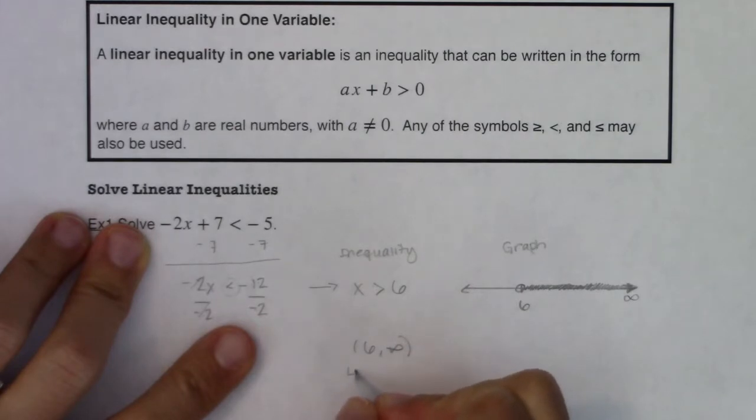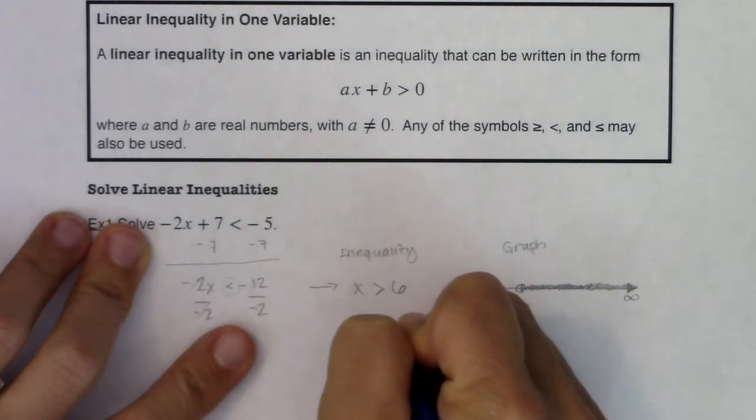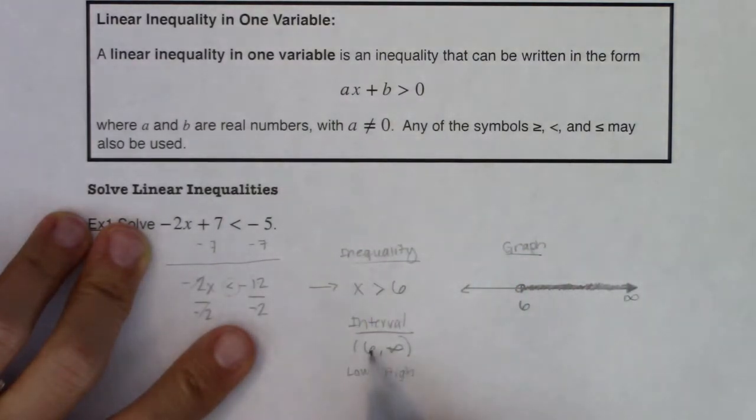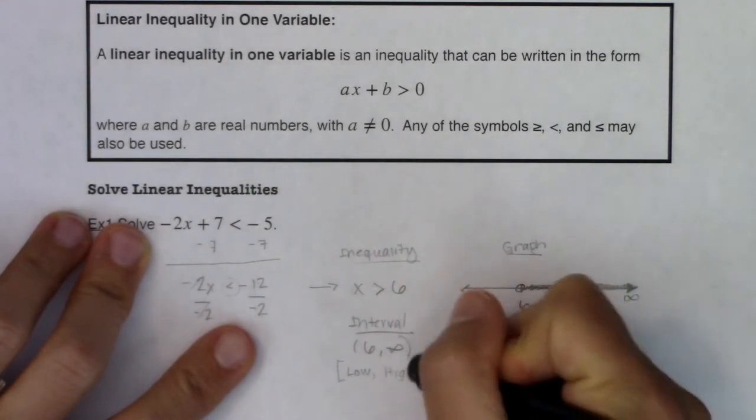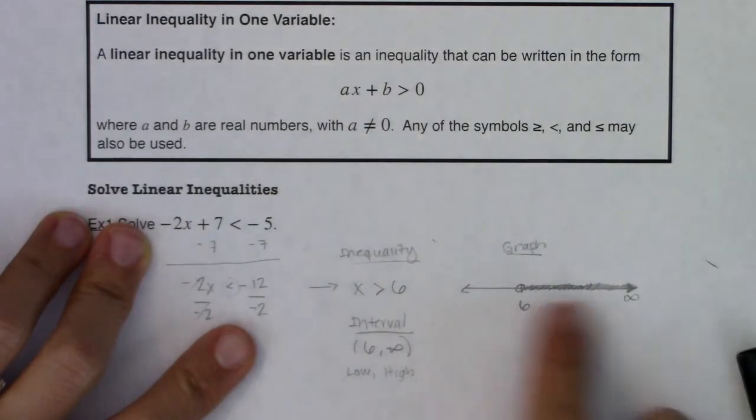That will always be the case. So when we go to interval notation, and that's what we're going to be practicing in this section, when we go to interval notation, it's always going to be low to high. And you will have options, you will either have brackets or parentheses. I'm going to erase those because in this particular case we want two parentheses, and I want to talk about why. But the numbers in your interval are always going to be low to high, whatever you shaded along the x-axis.